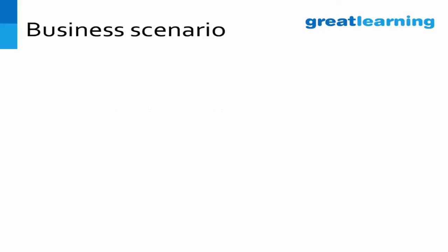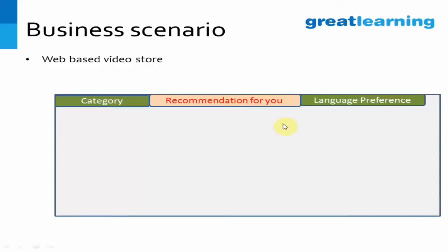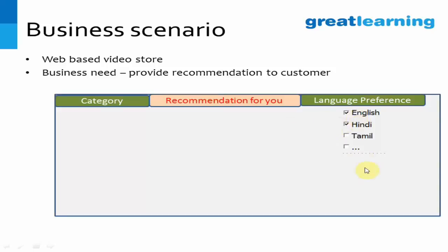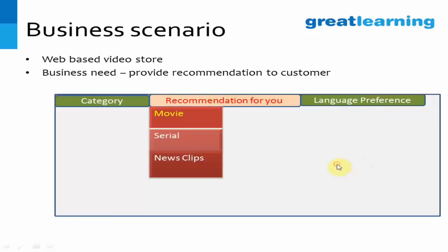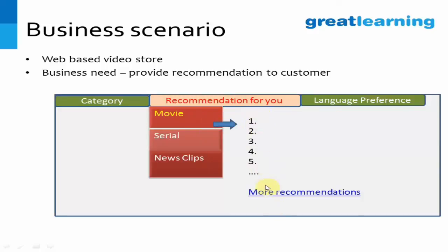The business scenario is a web-based video store. That website stores videos of movies, serials, and news clips. You have been given a task where you need to recommend videos to users. A user will typically provide some preferences like language, and whether they are looking for movies, serials, etc. Your task is to present a top-10 listing with a hyperlink to view more.